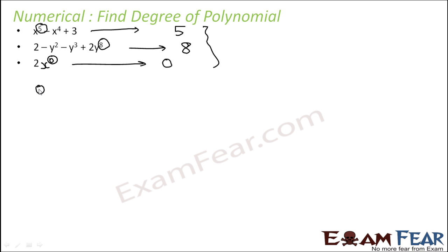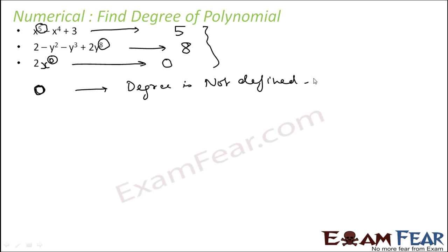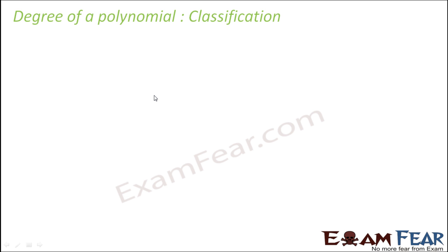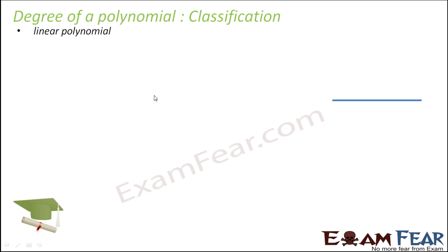You can take more examples to understand the concept of degree of a polynomial. In fact, I will show you the zero polynomial: in this case the degree is not defined. Please note — for the zero polynomial, the degree is not defined. We'll talk about why later. Since we have different degrees, we can actually classify polynomials as linear, quadratic, and cubic based on the degree.